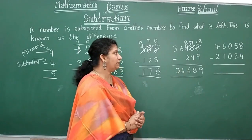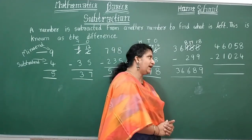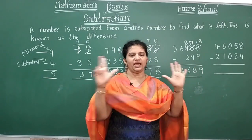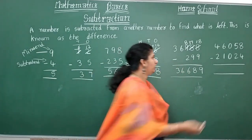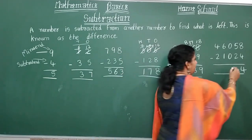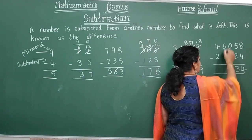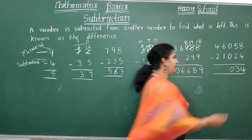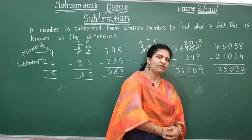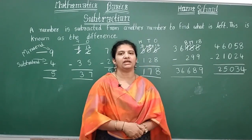Last problem: subtract 21,024 from 46,058. Ones place: eight minus four equals four. Tens place: five minus two equals three. Hundreds place: zero minus zero equals zero. Thousands place: six minus one equals five. Ten-thousands place: four minus two equals two. The difference is 25,034.